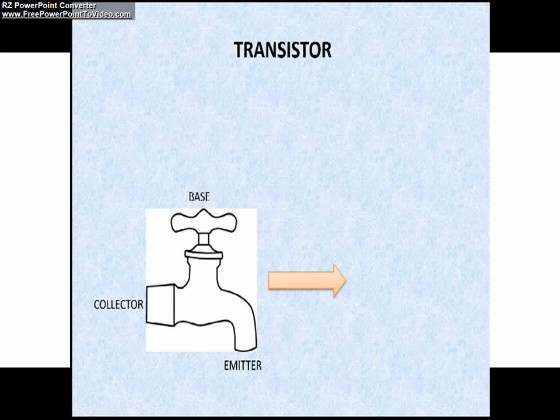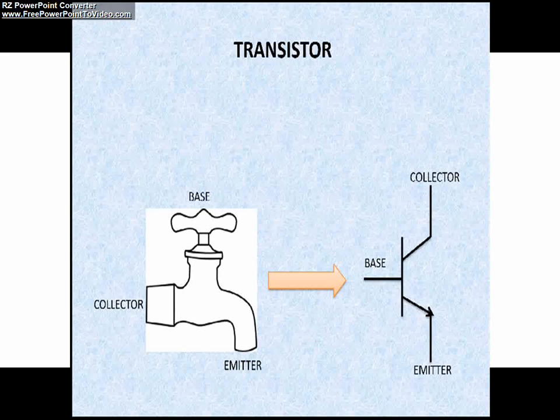In a similar manner, a transistor can control a much larger supply of electricity, which is connected to the collector, by using a small amount of electricity applied to the base of the transistor. Friends, as I already said, a transistor has three components: base, collector, and emitter.